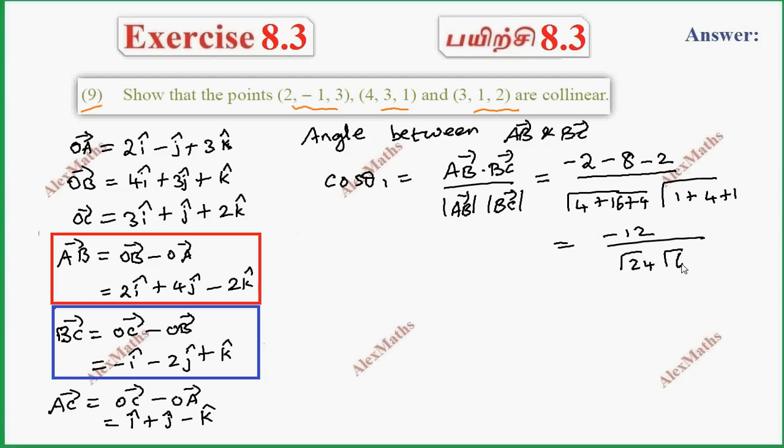This is root 6. Further simplifying, minus 12 over 24, which equals minus 1.